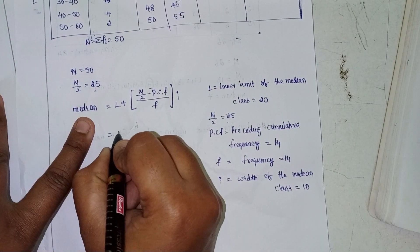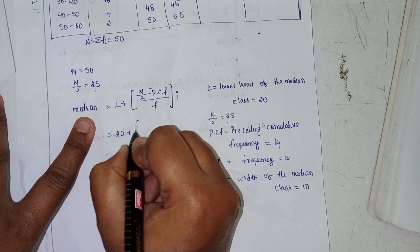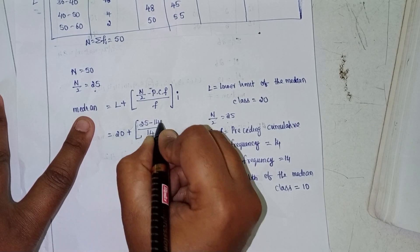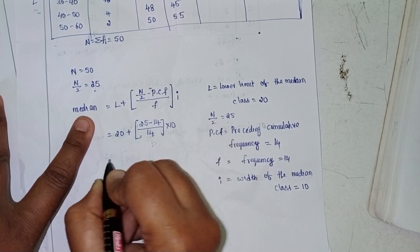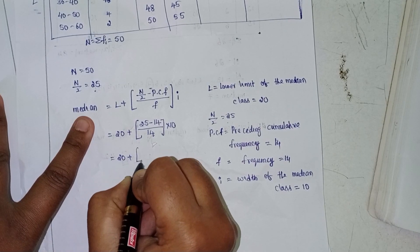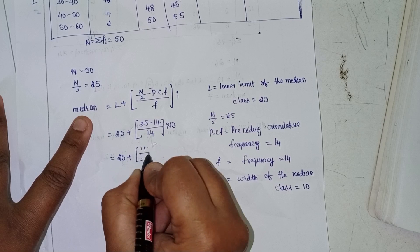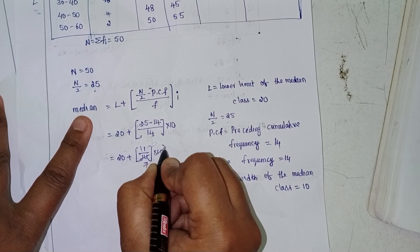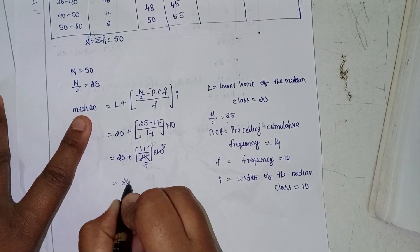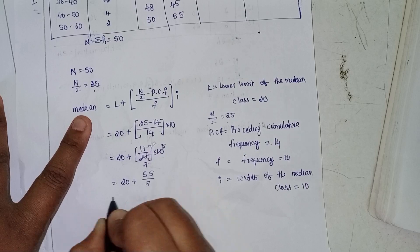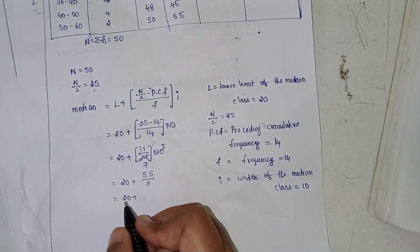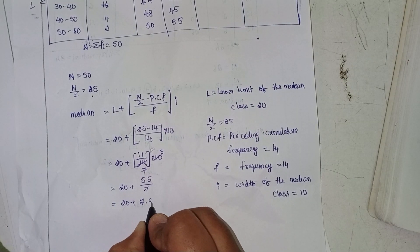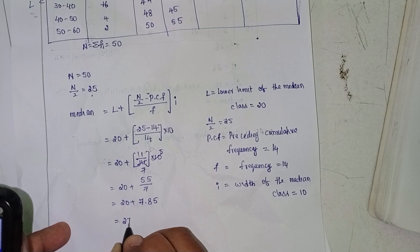Substituting: l is 20, plus n/2 is 25 minus preceding cumulative frequency 14, divided by frequency 14, into 10. So 20 plus 11/14 into 10, which is 20 plus 55/7. Using the calculator: 55/7 is 7.85. So median is 20 plus 7.85 equals 27.85.